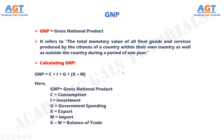In this formula, GNP represents Gross National Product, C represents consumption, I represents investment, G represents government spending, X represents export, M represents import, and the difference between X and M equals the balance of trade.